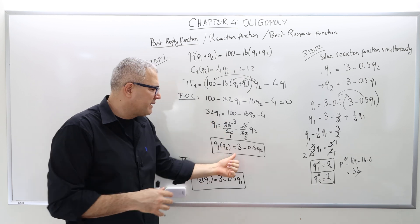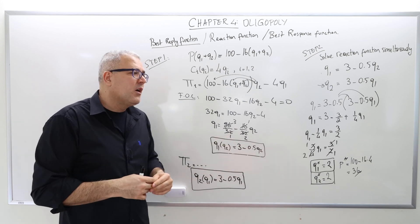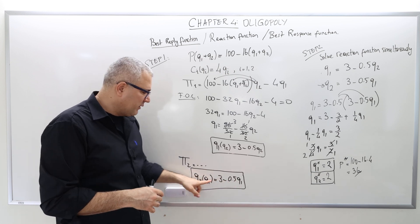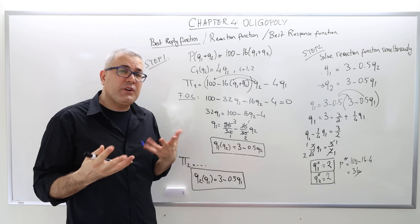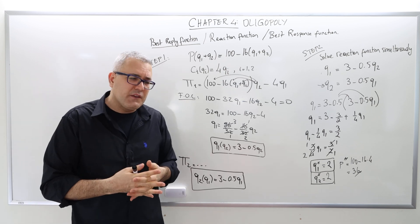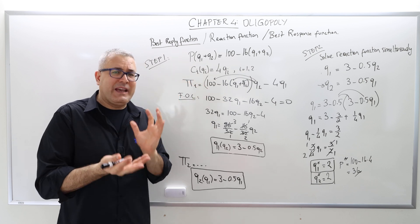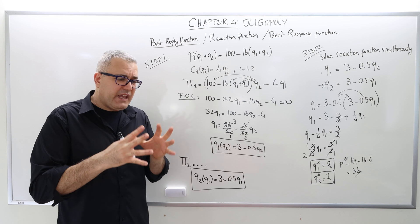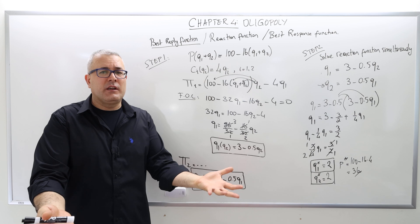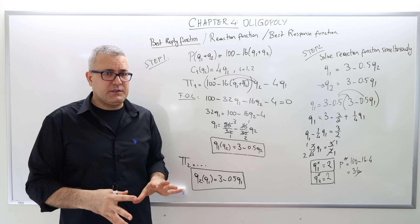The highest profit can be attained if I produce that much, given that my guess is correct. The same for firm 2: it makes a guess and then calculates its best response. So the question is, what should I guess in the first place? The Nash equilibrium, or Cournot-Nash equilibrium, says these two firms should make a guess such that once the game is over and the quantities are out there, none of them should regret their choices.